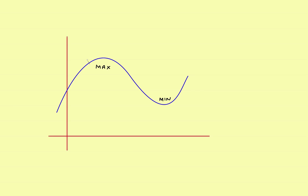Wherever you have a maximum, if you draw a horizontal tangent line right there, the slope of that tangent line is the derivative — and at a maximum, the derivative equals zero. The same is true at a minimum: a horizontal tangent line means the derivative is also equal to zero there. So maximums and minimums occur where the first derivative equals zero.